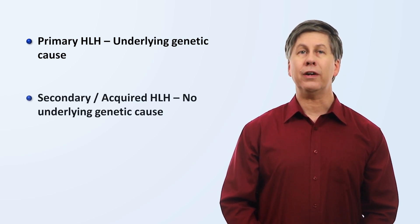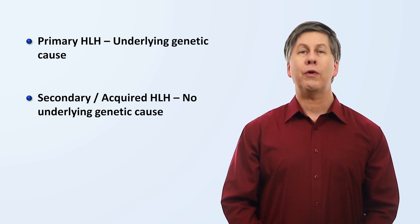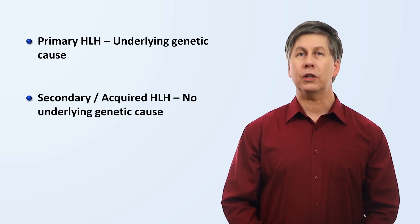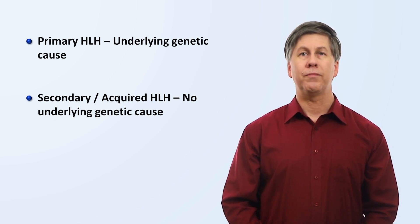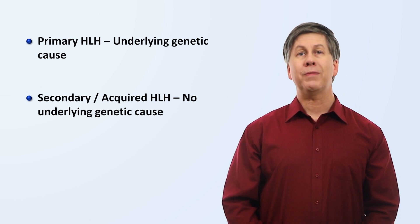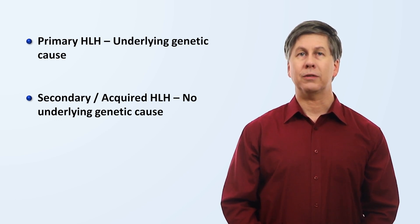HLH is labeled secondary or acquired when instead of an associated genetic mutation, there is another predisposing condition that triggers this particular form of immune system dysregulation. This can be a malignancy, infection, autoimmune disease, or organ transplantation.